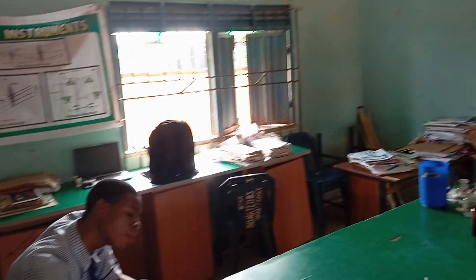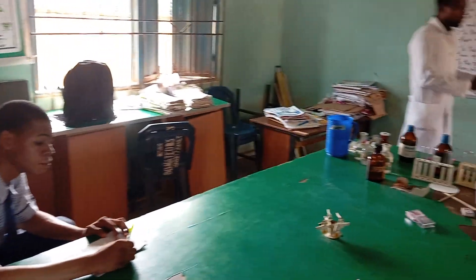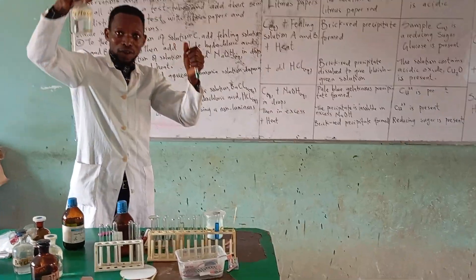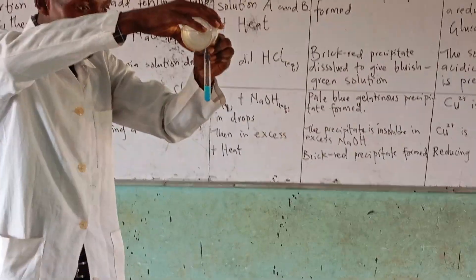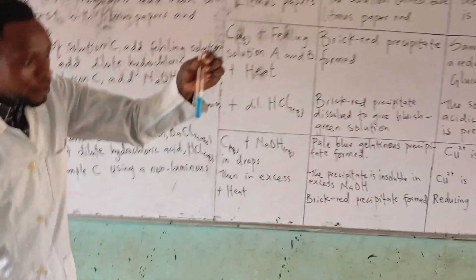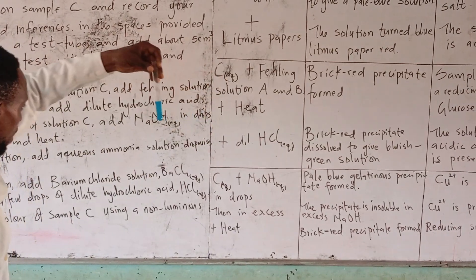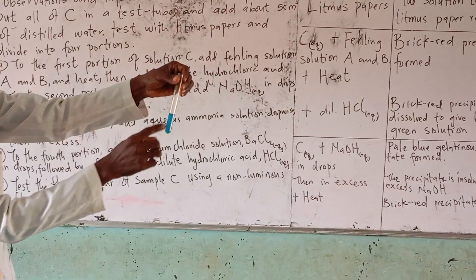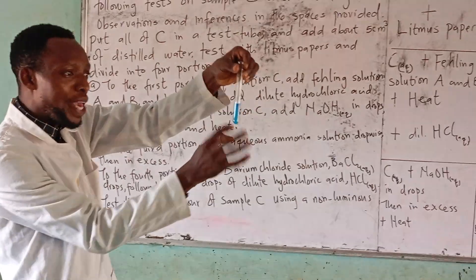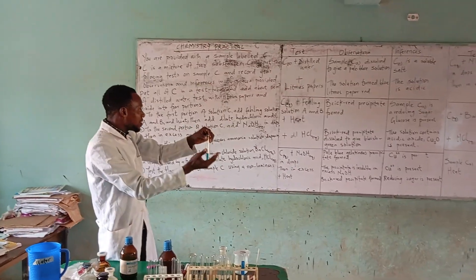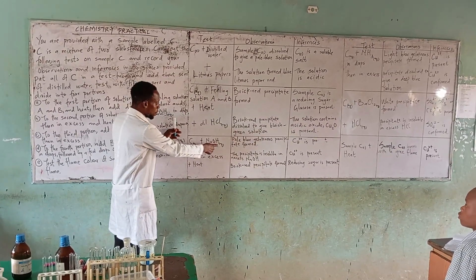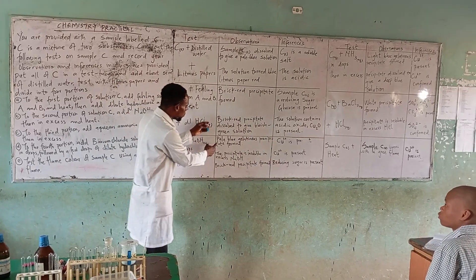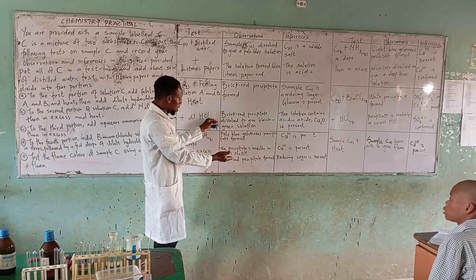Let's go to the second portion. To the second portion of the solution, add sodium hydroxide in drops, then in excess. We have our sodium hydroxide here. Adding it in drops — can you see what we have? This is a gelatinous precipitate, and the color is pale blue or light blue. So you record: C (aqueous) plus sodium hydroxide in drops → pale blue gelatinous precipitate formed.